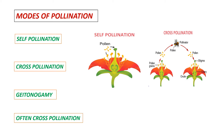Often cross pollination: though some plants undergo self pollination, a percentage of cross pollination occurs in them, ranging between 5 percent to 30 percent. Such crops are called often cross pollinated crops.